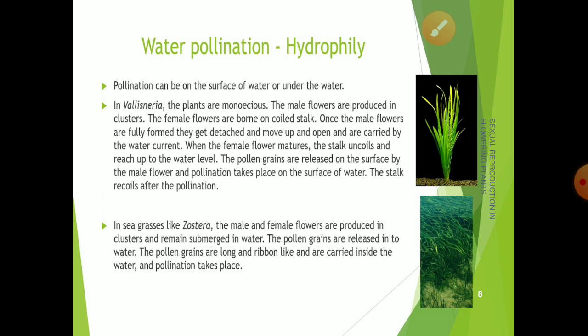Moving on to water pollination, also known as hydrophily — wind pollination is known as anemophily. It is observed that very few aquatic plants use water as a pollinating agent; other aquatic plants use insect or wind pollination. Only about 30 genera, mostly monocots, use water as a pollinating agent for gamete transfer.